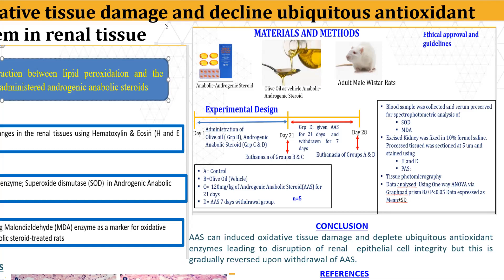Kidney tissue was fixed in 10% formalin saline and processed using an automated tissue processor. Processed tissue was sectioned at 5 microns and stained using H&E and PAS. Tissue photomicrography was done at 10x and 40x magnification. Data obtained was analyzed using GraphPad statistical analysis with a one-way ANOVA. Statistical significance was set at P less than 0.05, and data were expressed as mean plus or minus standard deviation.